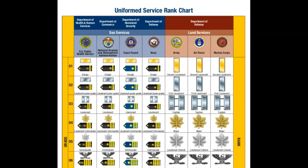Now that we've zoomed in on this uniform service rank chart, you can see that on the left side of the chart with the blue at the top, those are called the sea services. And the reddish rust color on the right-hand side is called the land services. Within the sea services, there's the Department of Health and Human Services Public Health Service, the Department of Commerce's National Oceanic and Atmospheric Administration, the Department of Homeland Security's Coast Guard, and the Department of Defense's Navy. On the right-hand side, the rest of the Department of Defense services fall under land services, which includes Army, Air Force, and Marine Corps.